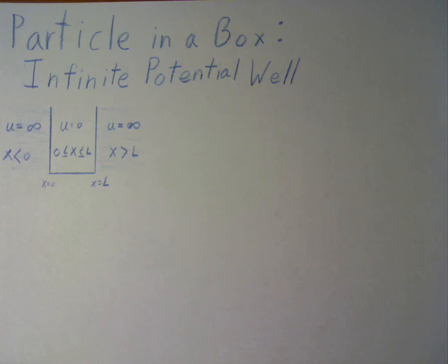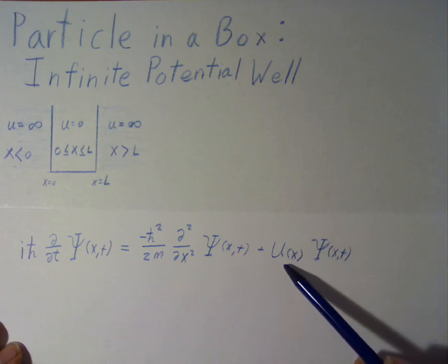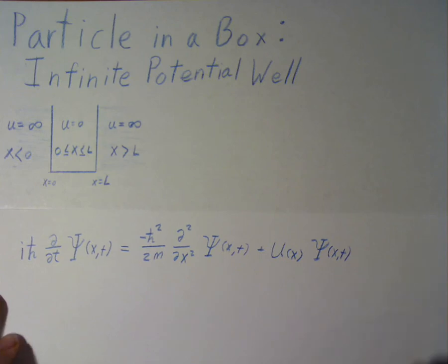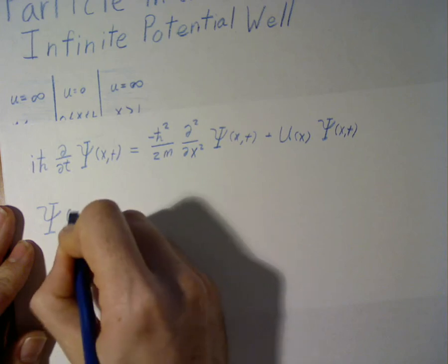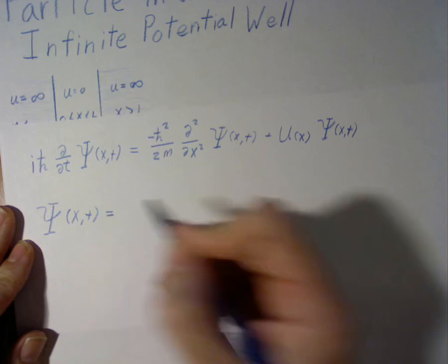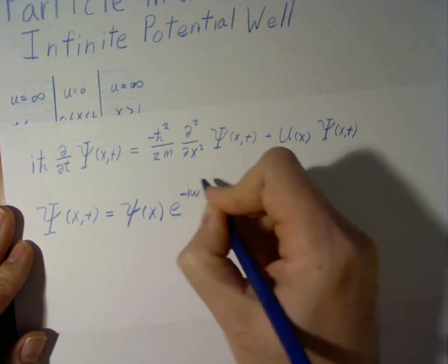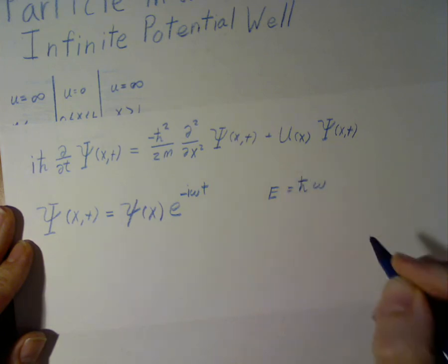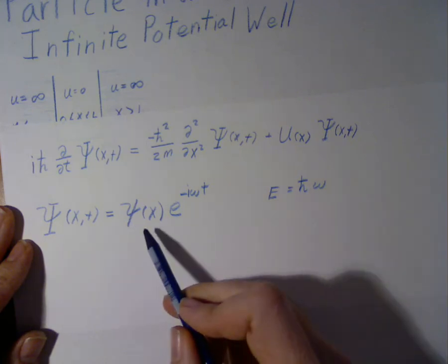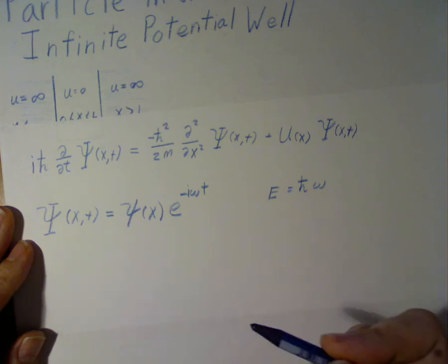To start this, we start off with the Schrödinger wave equation. This is the time-dependent Schrödinger wave equation. However, in this case, because our potential is time-independent, this equation is separable and we can simplify it by writing the generic wave function of x and t as a smaller wave function only of space and a time-dependent part of e to the i omega t, where energy equals h-bar omega. Because we have time-independence, we can use the time-independent Schrödinger wave equation.